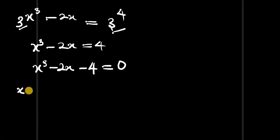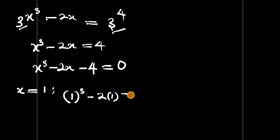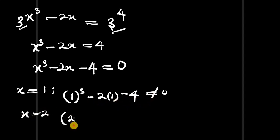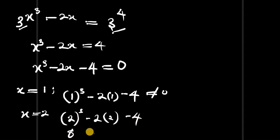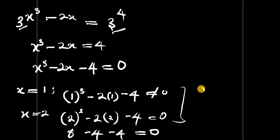Starting with x equals 1: 1 cubed minus 2 times 1 minus 4 gives 1 minus 2 minus 4, which is negative 5 — not equal to 0. Now trying x equals 2: 2 cubed minus 2 times 2 minus 4 gives 8 minus 4 minus 4, which is 0. So x equals 2 is one of the solutions.